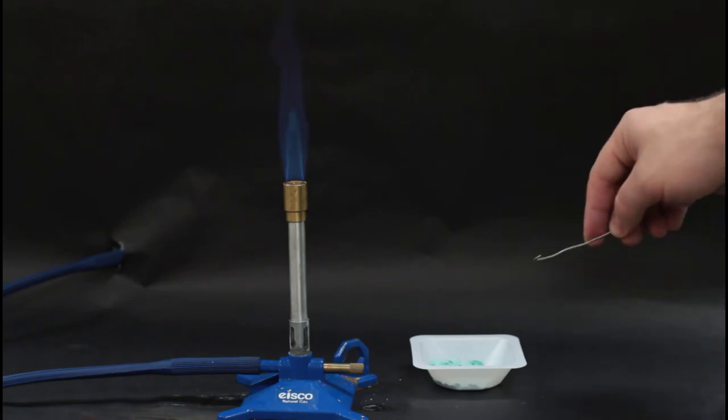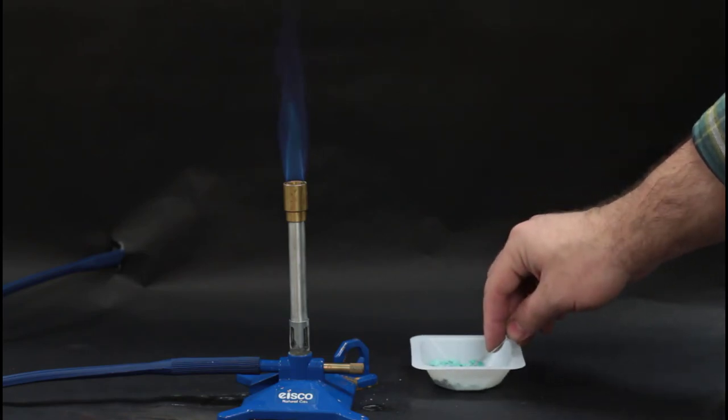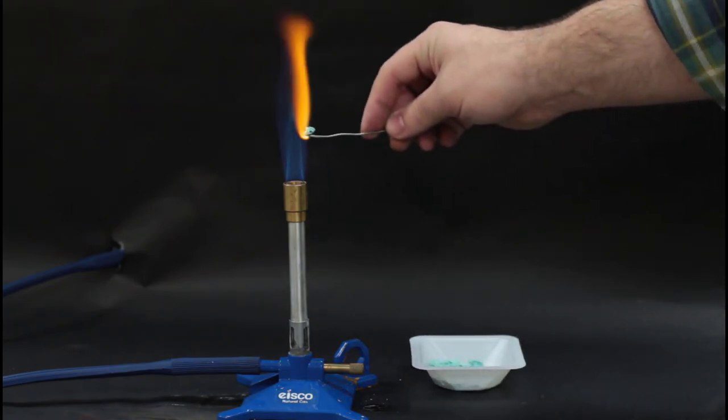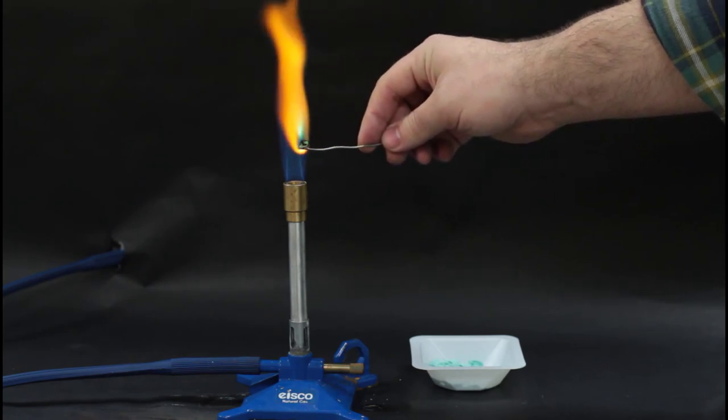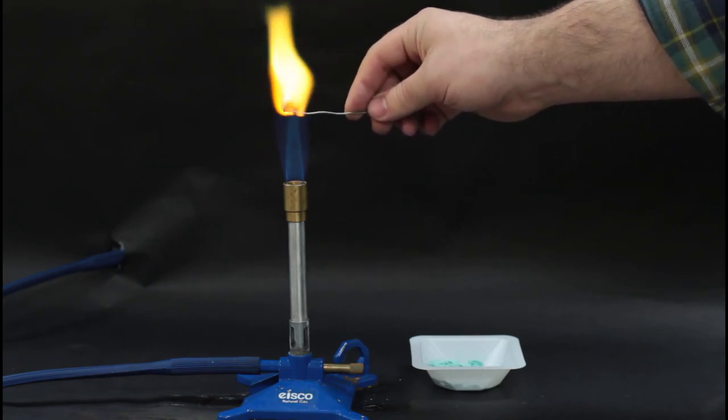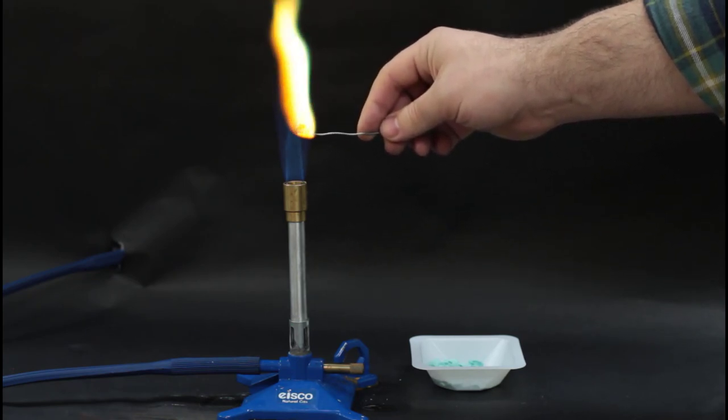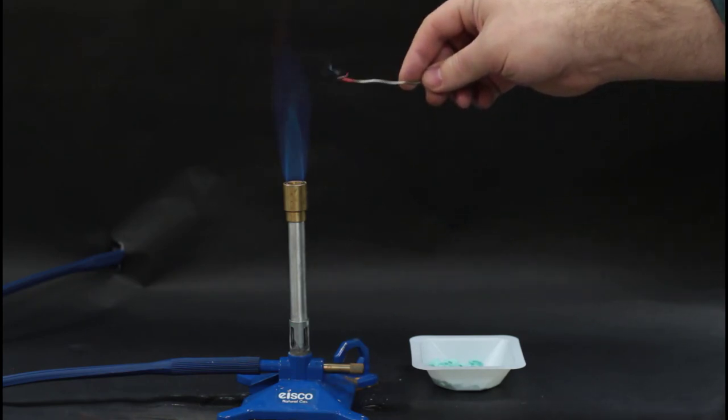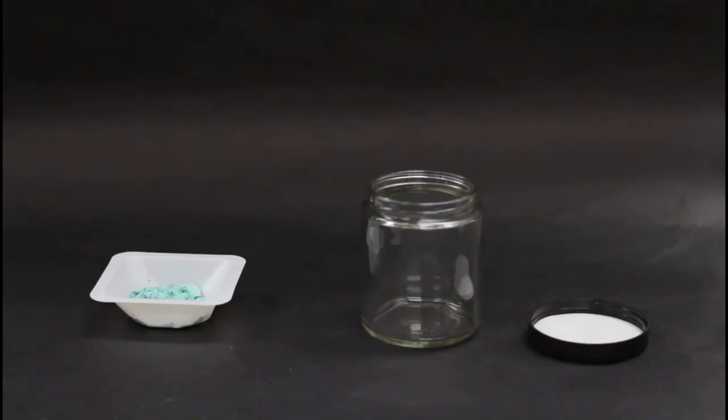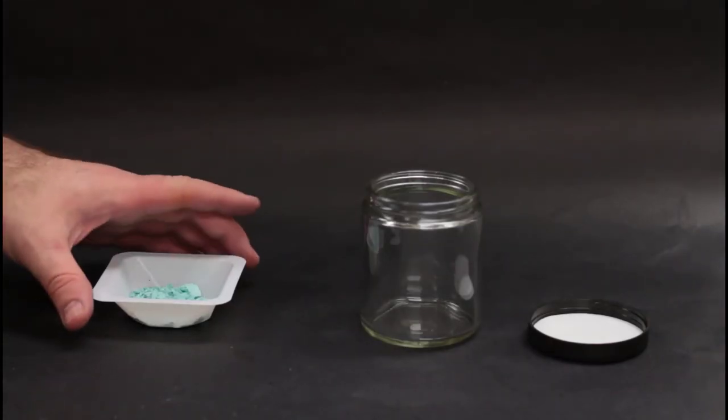Set up a Bunsen burner and run a flame test. The copper ions should make a green flame. If the flame is orange, that means the product is contaminated with sodium from the sodium carbonate. Give your final product to the instructor and run your calculations.